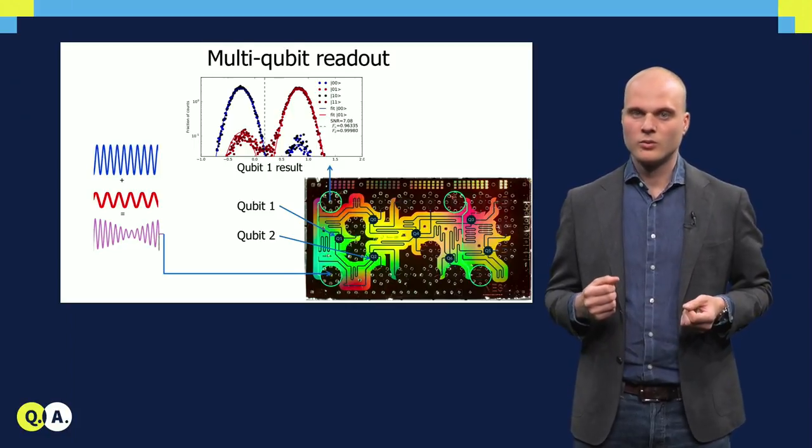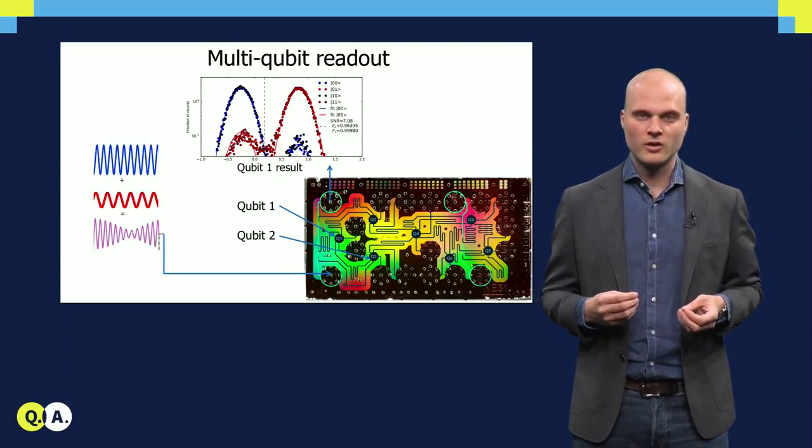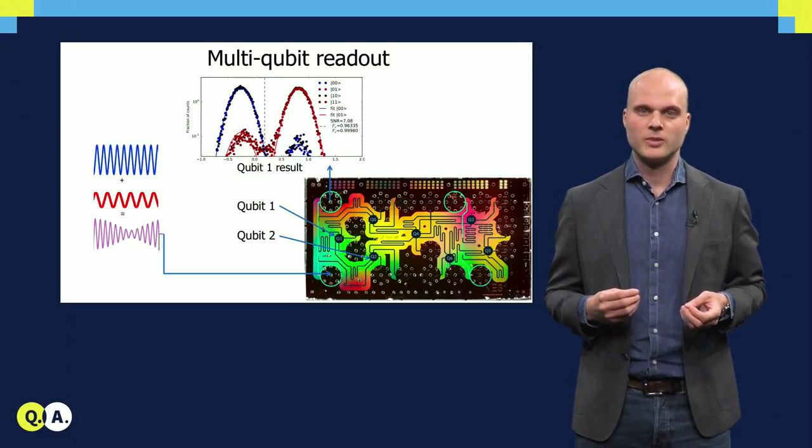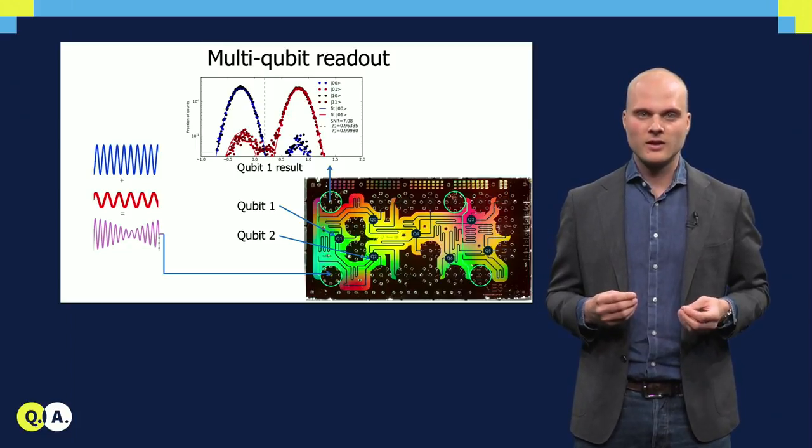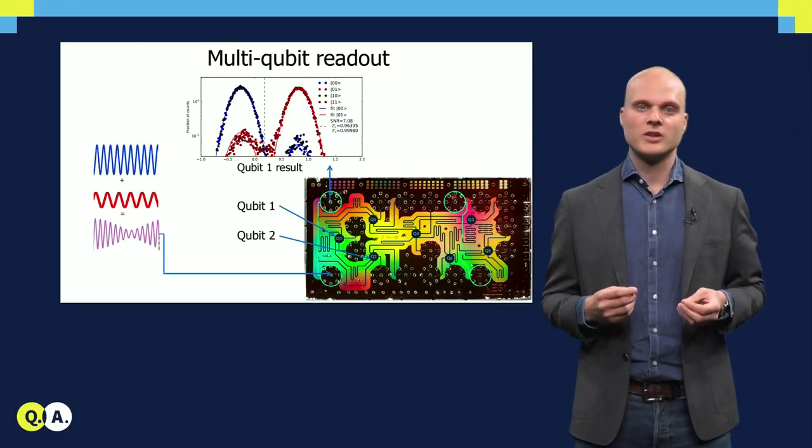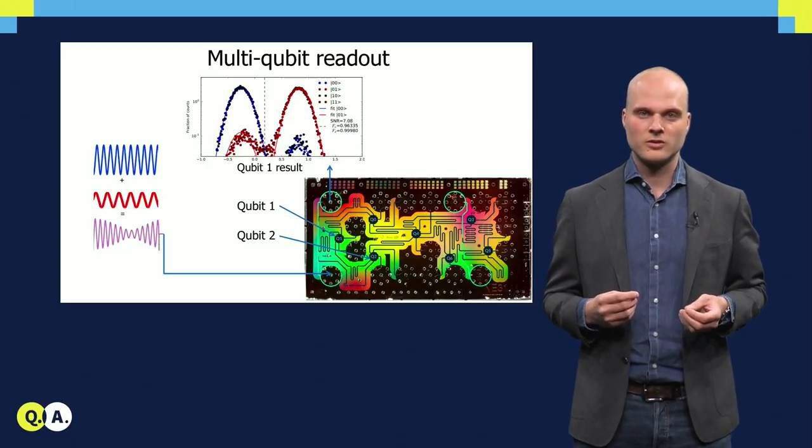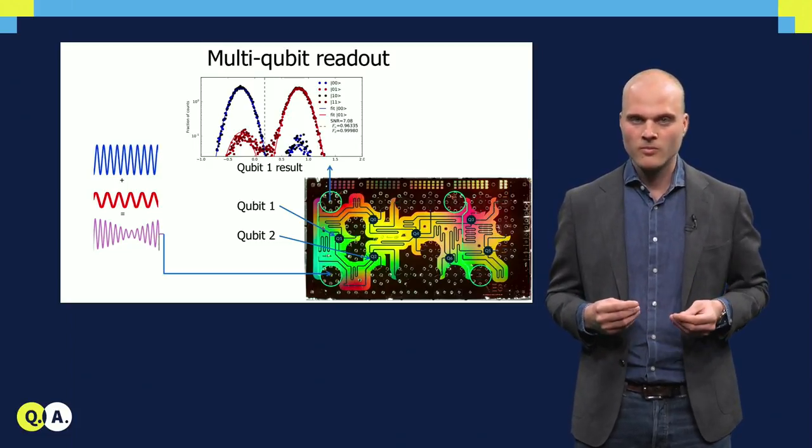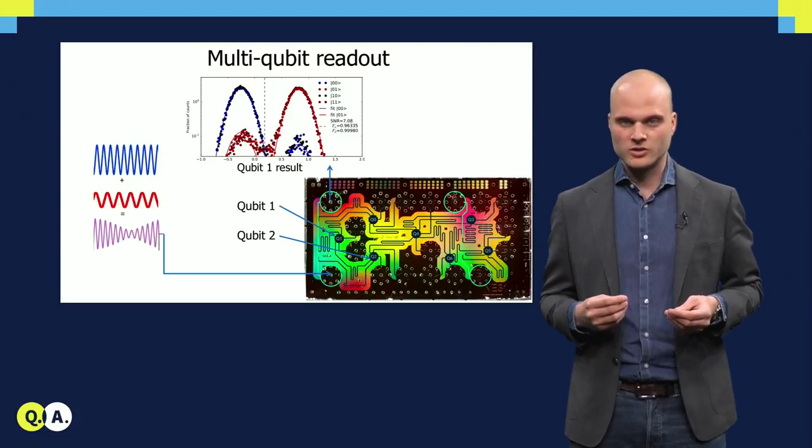Here, we show the readout results for qubit 1, for each of the four possible two-qubit basis states, indicating that the signal practically only depends on the state of the targeted qubit, separating 00 and 10 from 01 and 11.